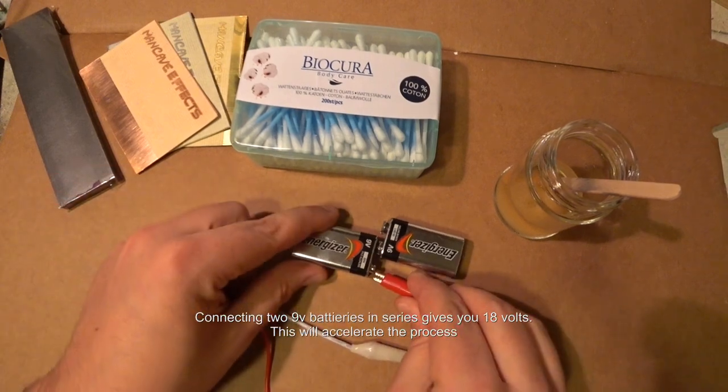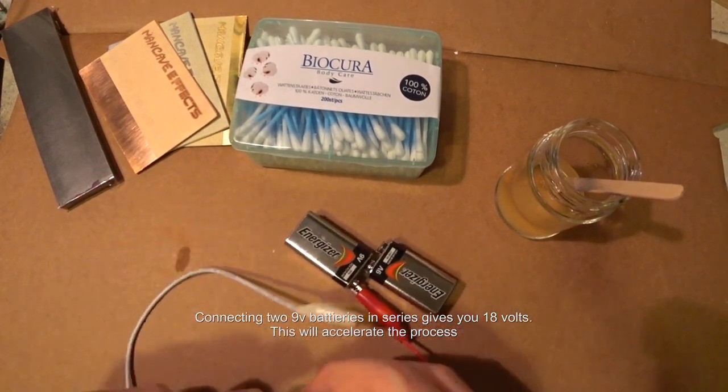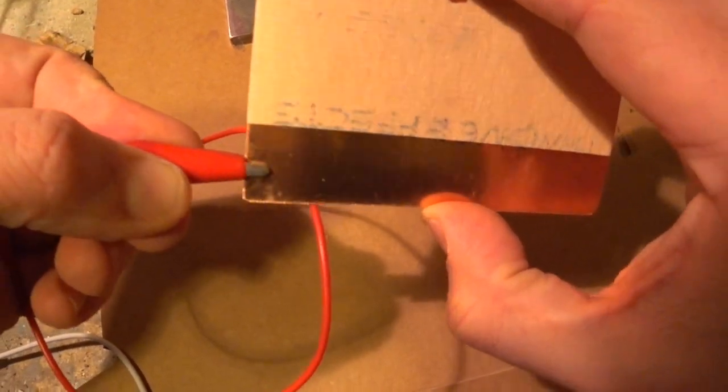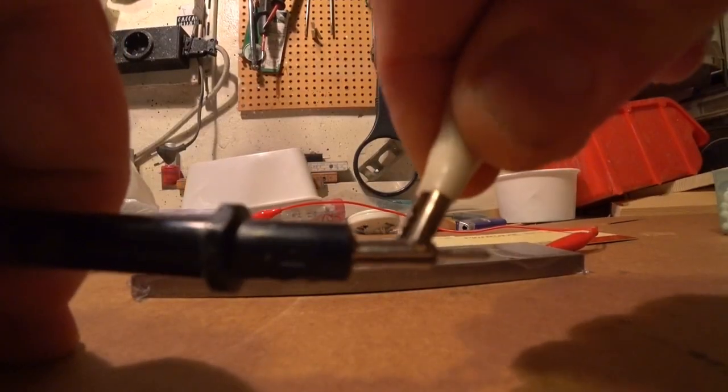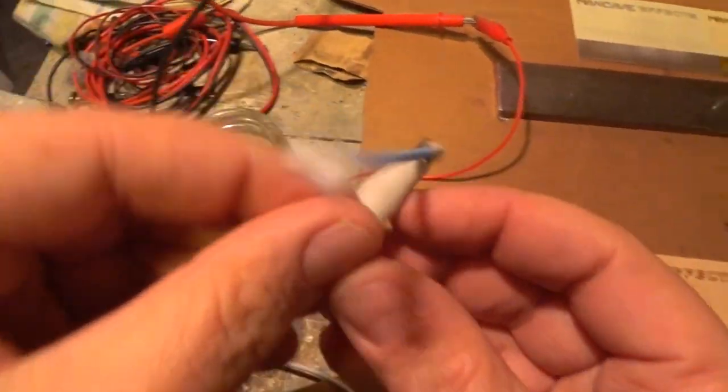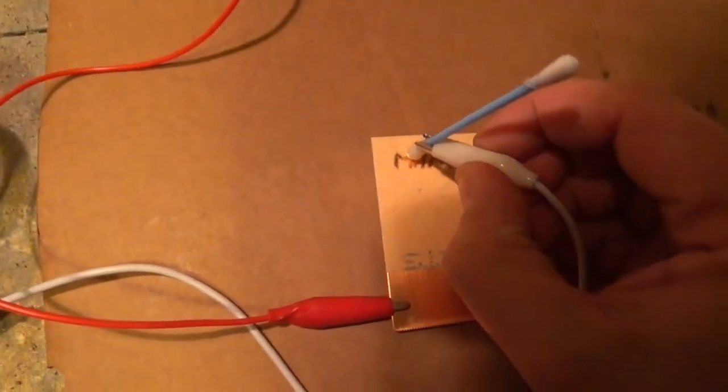Now hook up the red alligator clip to the plus terminal of your battery or power source and connect it to your workpiece. Dip one of the Q-tips into the salt and vinegar solution, then clip on the white alligator clip that connects to the negative terminal.